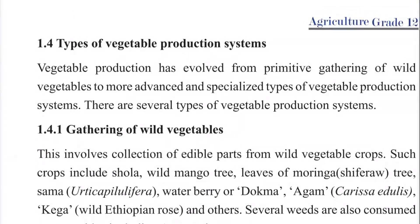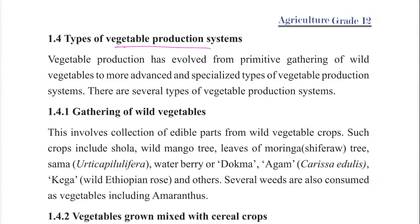Types of Vegetable Production Systems. Vegetable production has evolved from primitive gathering of wild vegetables to more advanced, specialized types of vegetable production systems.